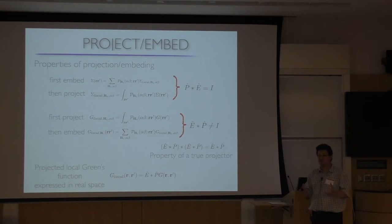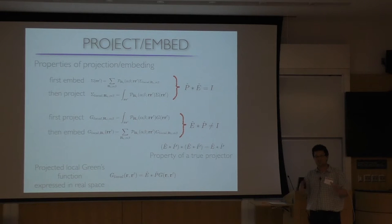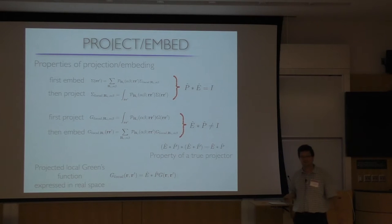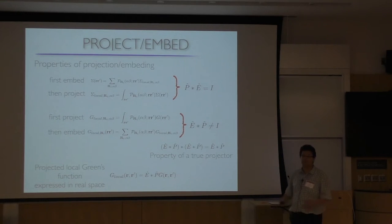Question: how do you know what the projectors are? That depends on what you choose for P. For example, you choose the five 3d orbitals for a given site: xz, yz, xy, x²−y², z². You have to choose some real-space orbitals — typically you expand in terms of spherical harmonics Y_lm. Everything lives in Hilbert space with indices R, R'. The rest of the information — the 1 minus P component — is treated in mean field and is present in the Dyson equation.